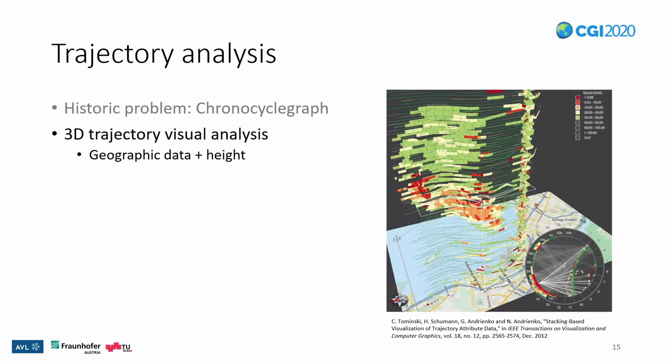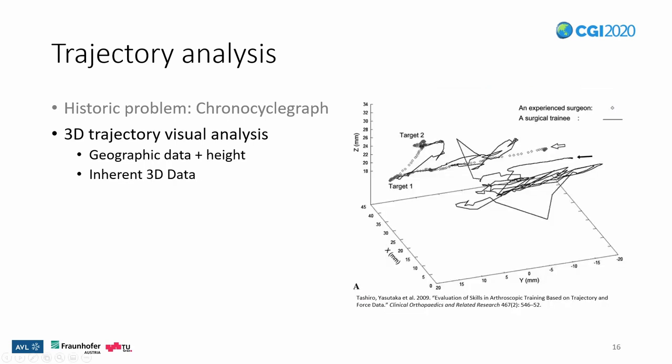Most 3D trajectory visualization methods use a third dimension to display additional data on 2D trajectories. We can see this with 2D geographic movement information and a stacking of information in the third dimension. Alternatively, some methods also use inherent 3D movement data as a basis. Sashiro et al., for example, visualized 3D movement data of doctors using a haptic pen to compare the movement of doctors with different levels of proficiency. In this case, we can see that experienced surgeons have a more steady movement towards the target.